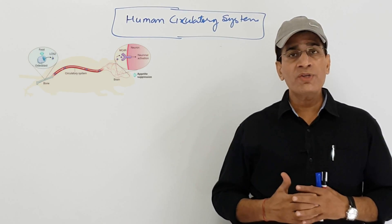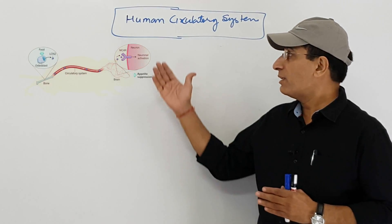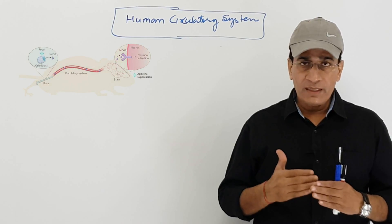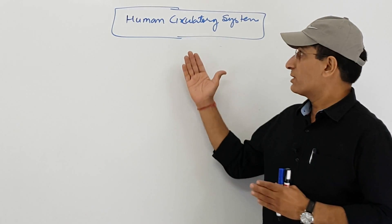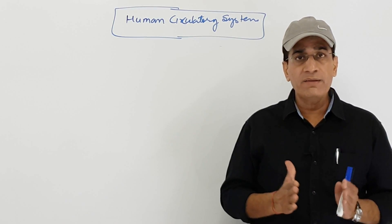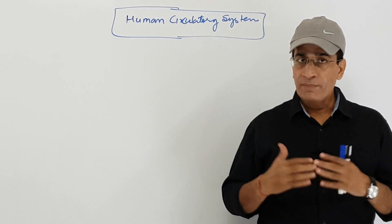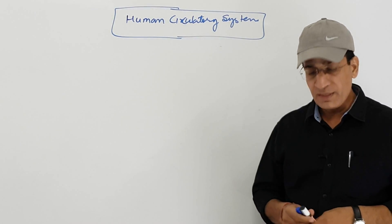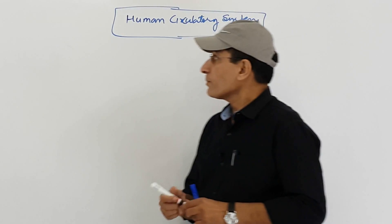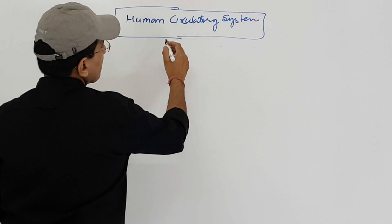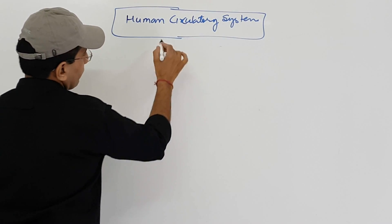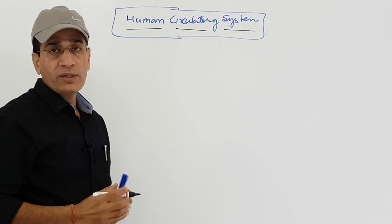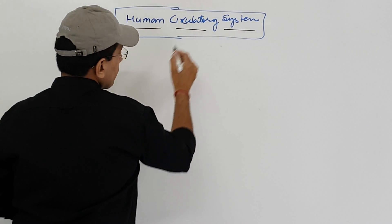In lower organisms, no such developed and consolidated circulatory system exists. Circulation is conducted by the locomotion and cell motions. Lower organisms also regulate gaseous circulation through contact with air, and organisms present in water do so with water. That is why the human circulatory system is very important, and it carries very important questions in examinations.